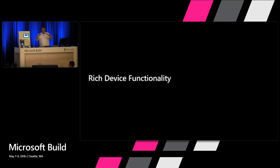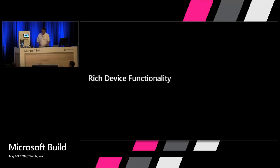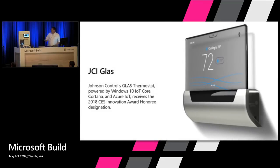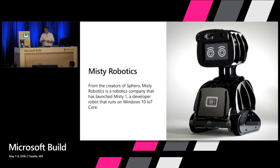Moving up the value chain: the ability to make a device with rich functionality using Windows. This is a reason you would choose Windows as your OS. JCI Glass came out at CES and won design awards with their solution — a great reason to use the Windows UI platform. Misty Robotics came out at CES and got strong recognition; they're running Windows IoT Core on their main board, and Misty 2 is coming out shortly — it's on the expo floor if you want to check it out.